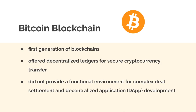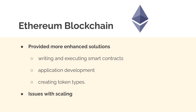The Bitcoin blockchain was the first generation of blockchain, offering a decentralized ledger for secure cryptocurrency transfer. However, Bitcoin did not provide a functional environment for complex deal settlement and decentralized application development. Then came the Ethereum blockchain, a second-generation blockchain, which provided enhanced solutions for writing and executing smart contracts, developing applications, and creating tokens. But Ethereum still had issues such as scaling.